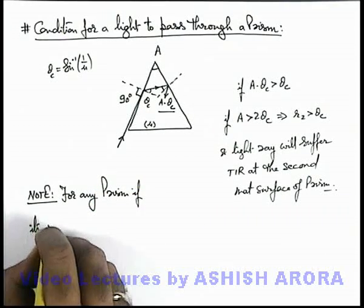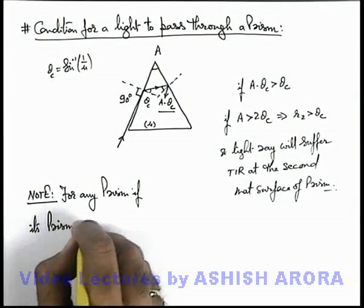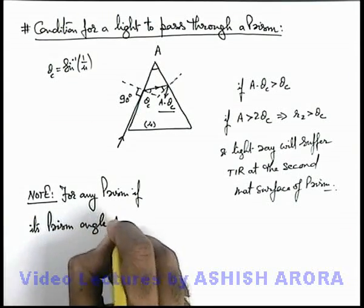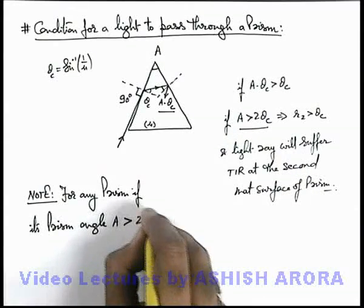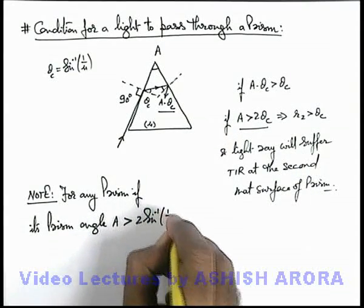if its prism angle A is greater than twice the critical angle, that means twice of sine inverse of 1 by mu,